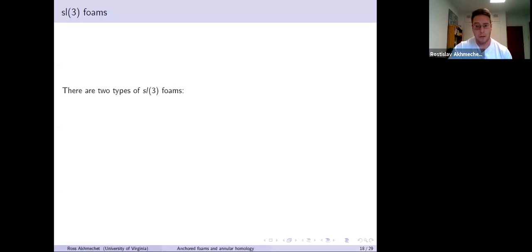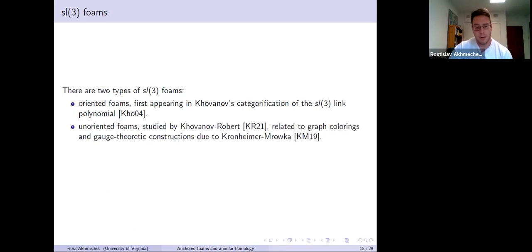There are two types of SL3 foams. The first is oriented foams, and they appeared first in Khovanov's categorification of the SL3 link polynomial. More recently, there are unoriented SL3 foams studied by Khovanov and Robert. This doesn't yield link homology unlike the oriented setting, but it's related rather to graph colorings and gauge theoretic constructions introduced by Kronheimer and Mrowka. We consider both oriented and unoriented SL3 foams, but in this talk I'll just focus on the oriented ones, the ones that give link homology.